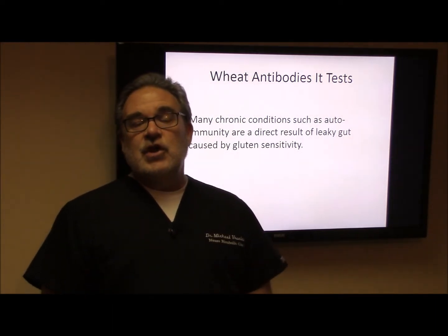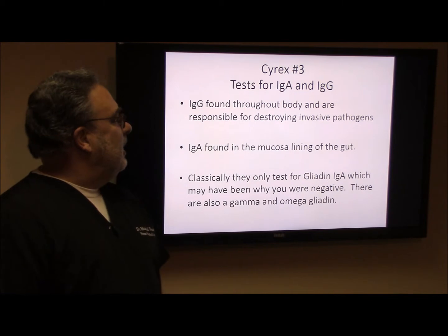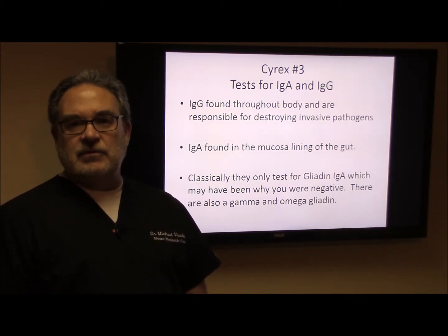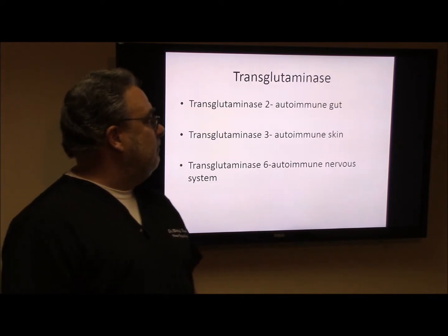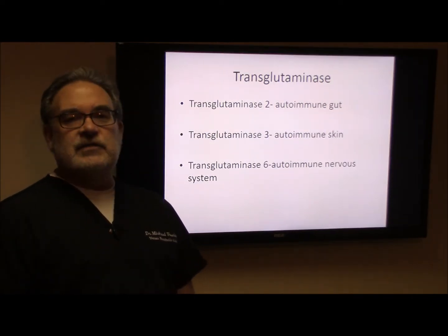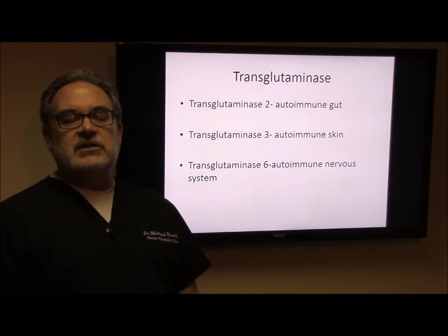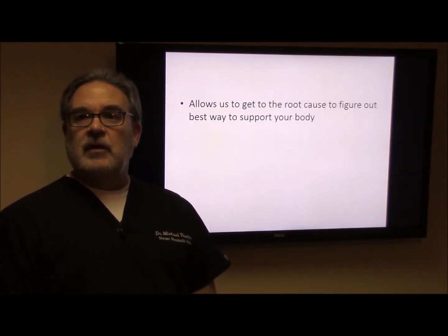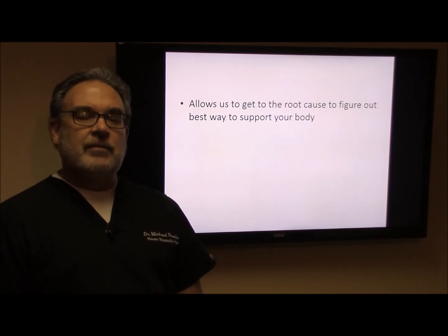Many chronic conditions are a result of autoimmunity and a direct result of this leaky gut syndrome. If any of these are found through the body, it means our body is identifying these pathogens as foreign invaders and begins to attack them. You're going to have markers — the IgA and the IgG marker. Array 3 also tests for something called transglutaminase — specifically transglutaminase 2, 3, and 6. What these basically suggest, if present in your bloodstream, is that you have an autoimmunity to either your gut, your skin, or your nervous system, depending on which one is positive. This really allows us to get to the root cause and figure out the best way to support your body once we identify which wheat molecule is actually causing the issue.